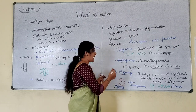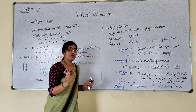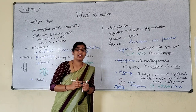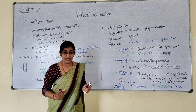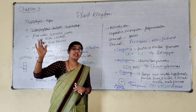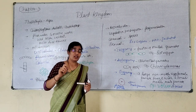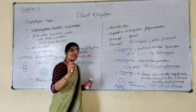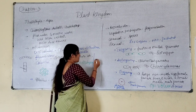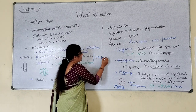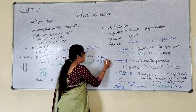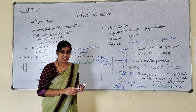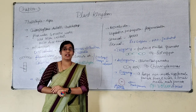The embryo stage is absent in algae. In sexual reproduction, after the fusion of male and female gametes, a diploid zygote is formed, but in algae the embryo stage is absent — it is totally absent. The zygote will directly grow into a new individual.